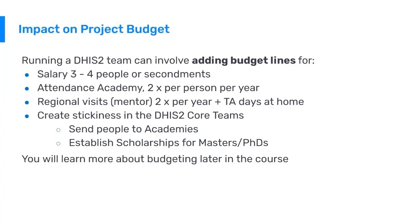Running a DHIS2 team involves several budget lines. You need to budget for salary costs for at least three to four people, or other means of secondments or incentives. You need to budget for attending academies — at least two per person per year — which can be virtual or physical. It's important to keep up to date with the latest on DHIS2 and build skills. It can be useful to budget for regional visits from the HISP groups if you need support from external experts. And again, create stickiness in the DHIS2 core team, such as sending people to academies or establishing scholarships.